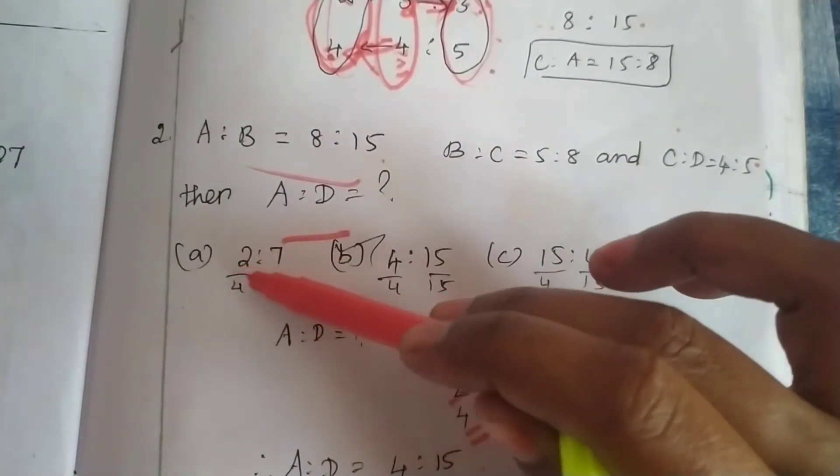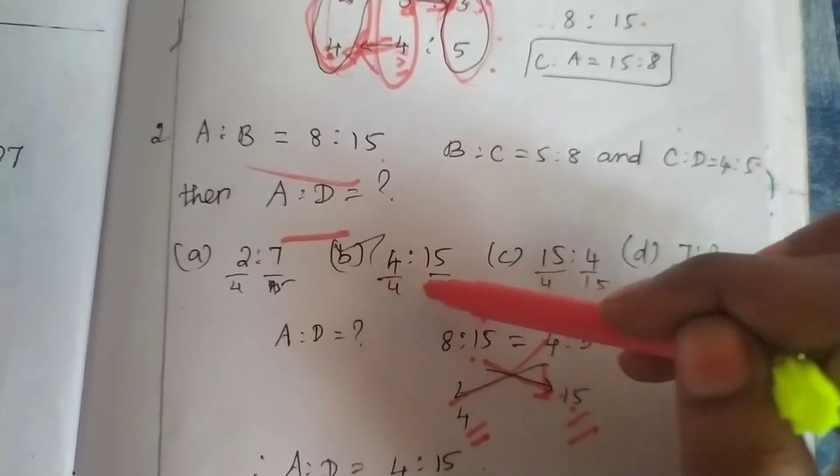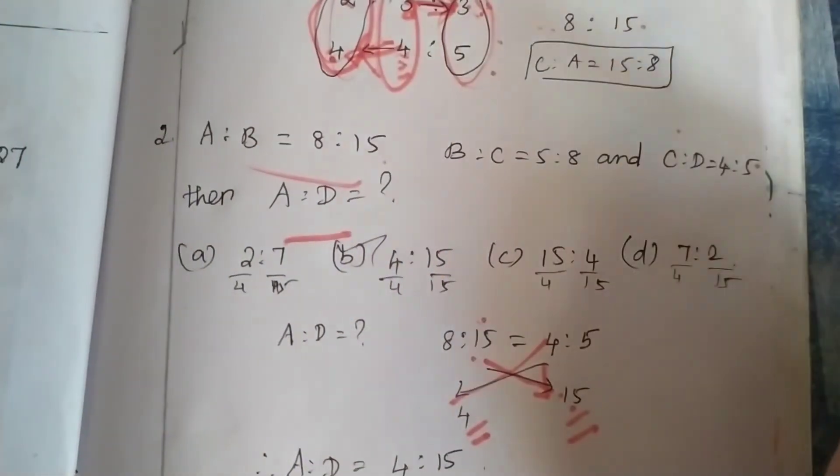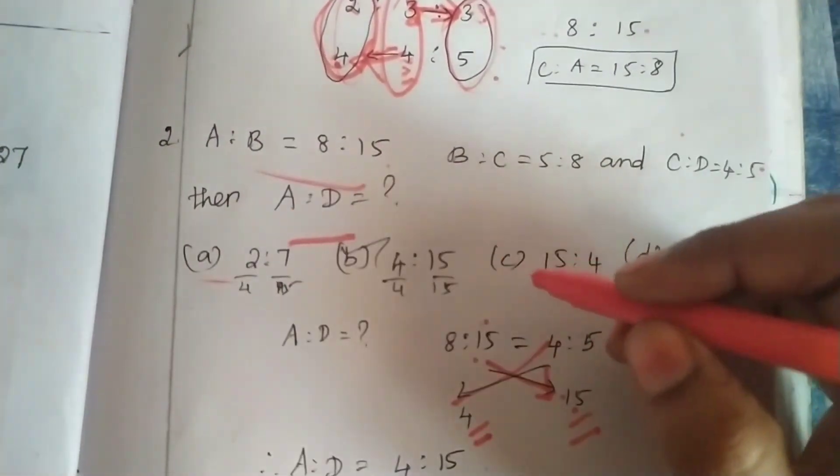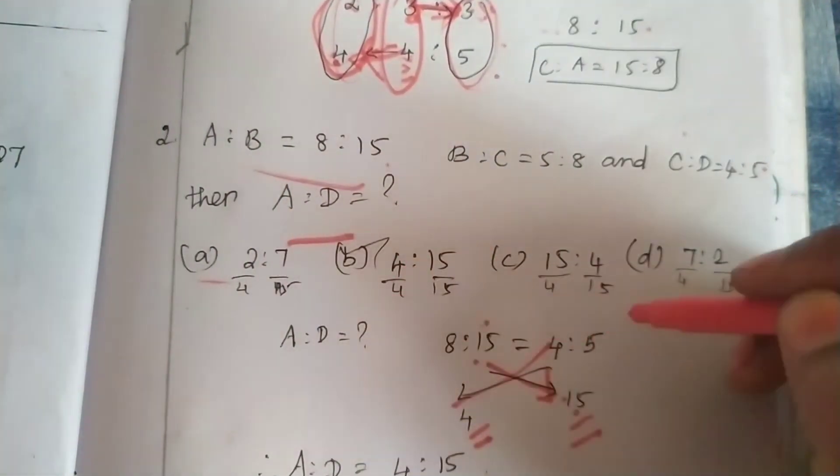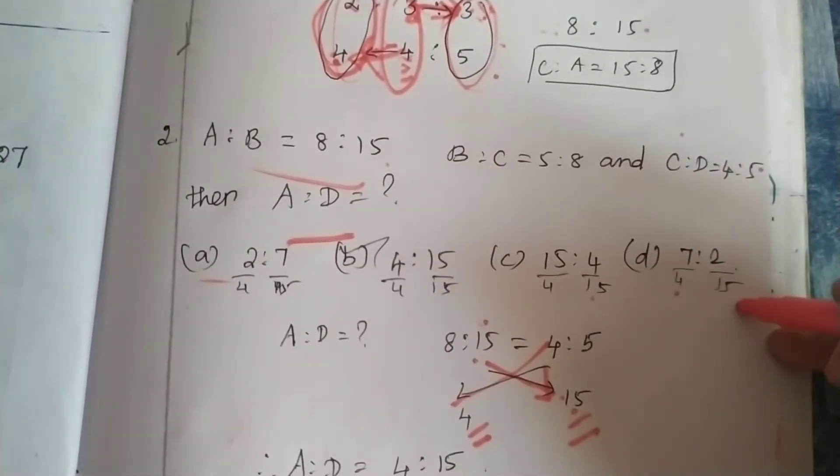The first ratio is 4 and second ratio is 15. What do we do? We do this 4 and we do this 15. It's 4 and 15. Here is 4 and 15.